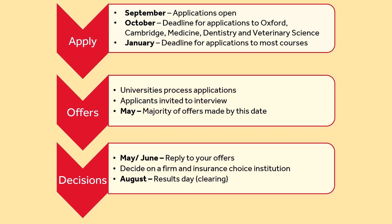The deadline for most other courses is January. Then universities will process applications and you may be invited to interview as part of your application process — you can check on university websites to see whether your course interviews. May is when the majority of offers are made. Around May to June is when you reply to your offers and decide on your firm and insurance choices. Your firm choice is where you really hope to get in, and your insurance is your backup option, usually with lower grade requirements. In August, results day is when you find out if you've met your offer. This is also when clearing opens, so if you have missed your offer you can still call through clearing and potentially go to university on a course that has leftover spaces.